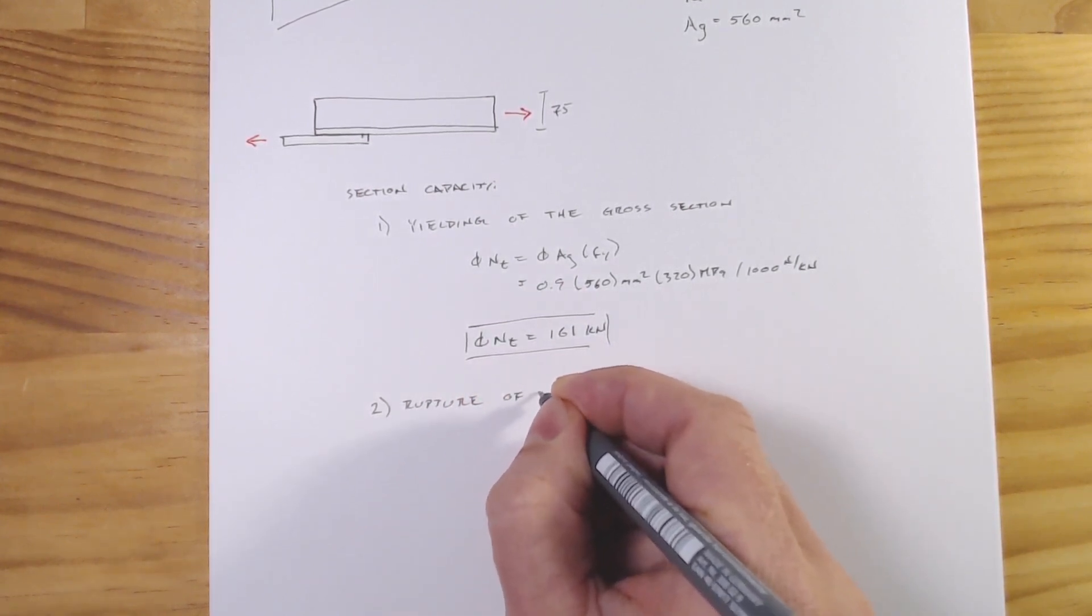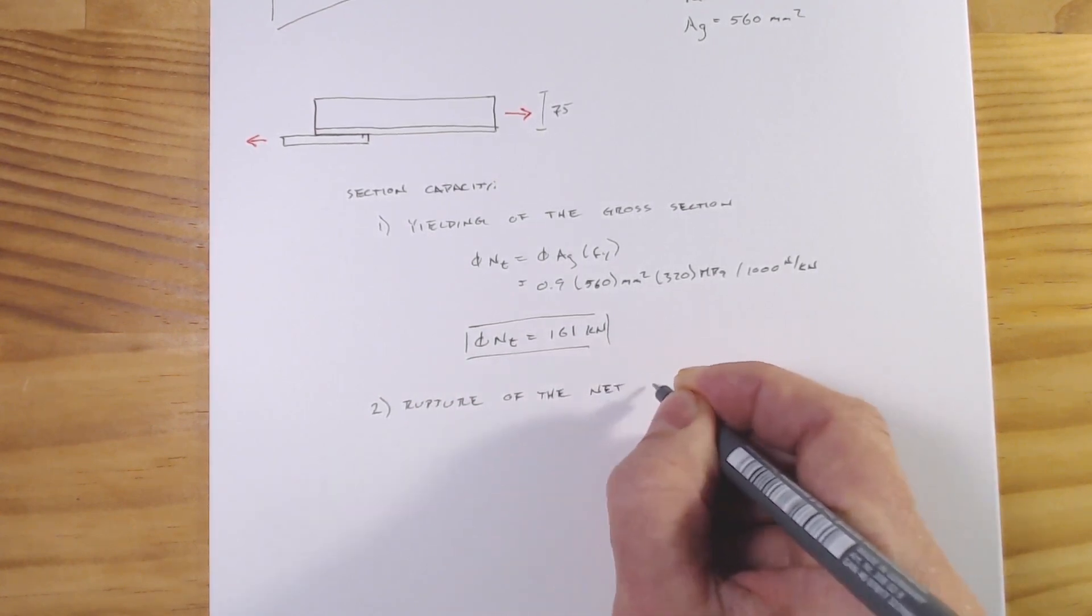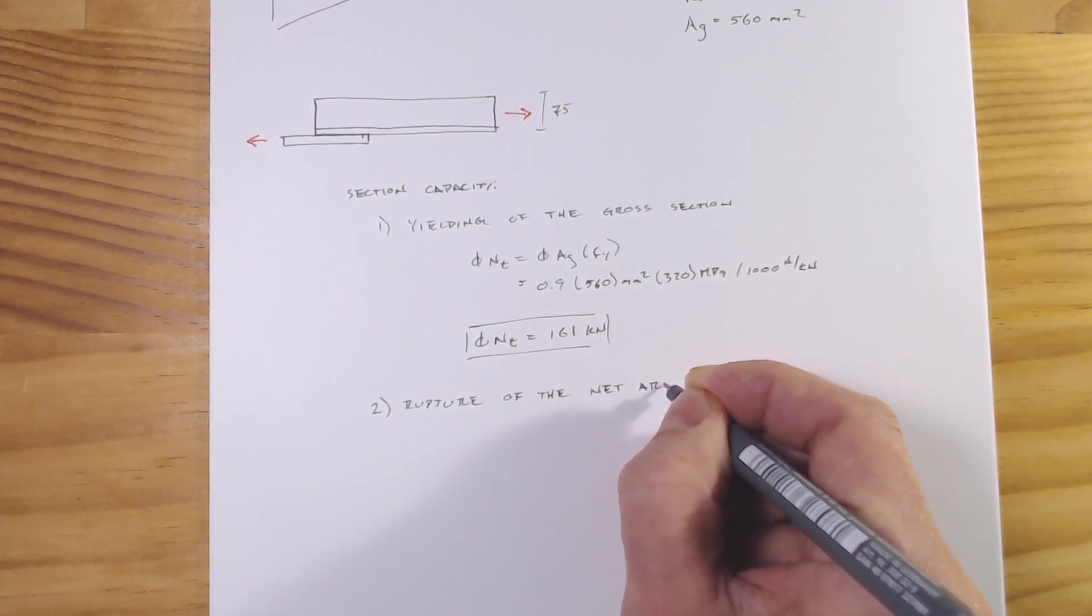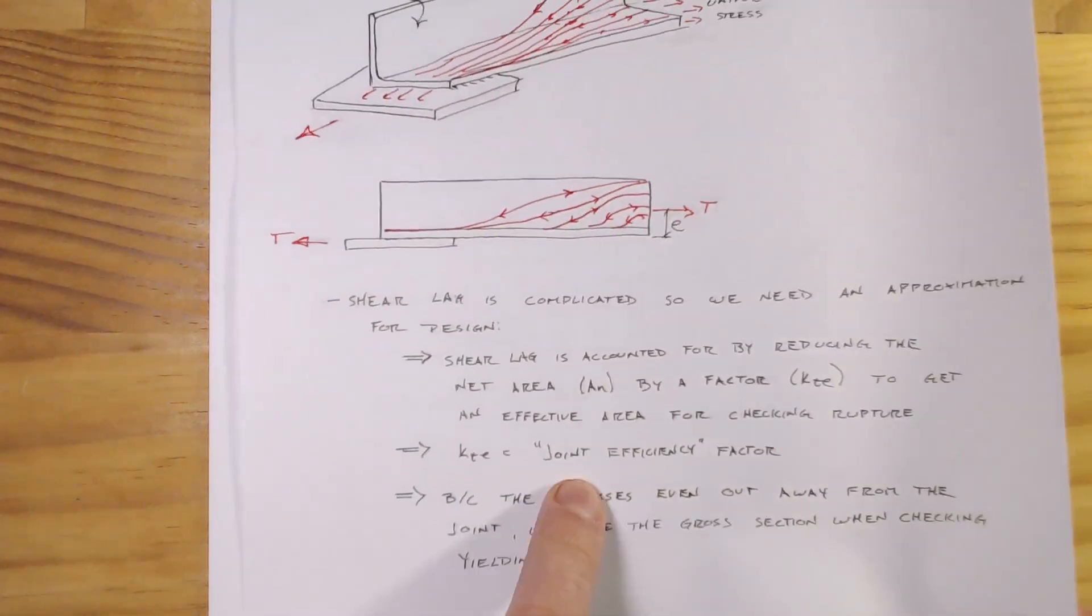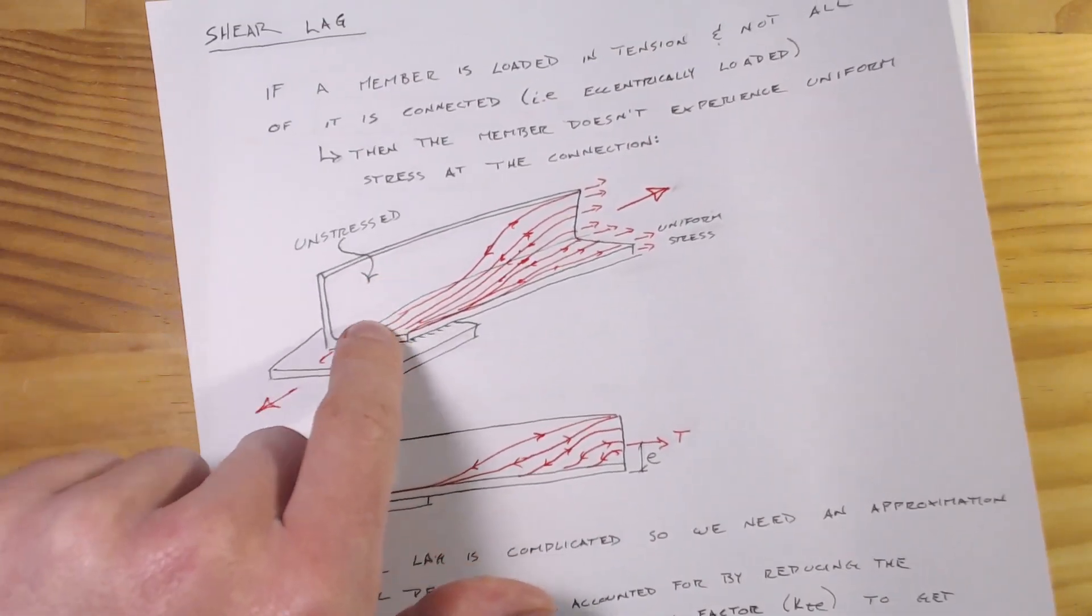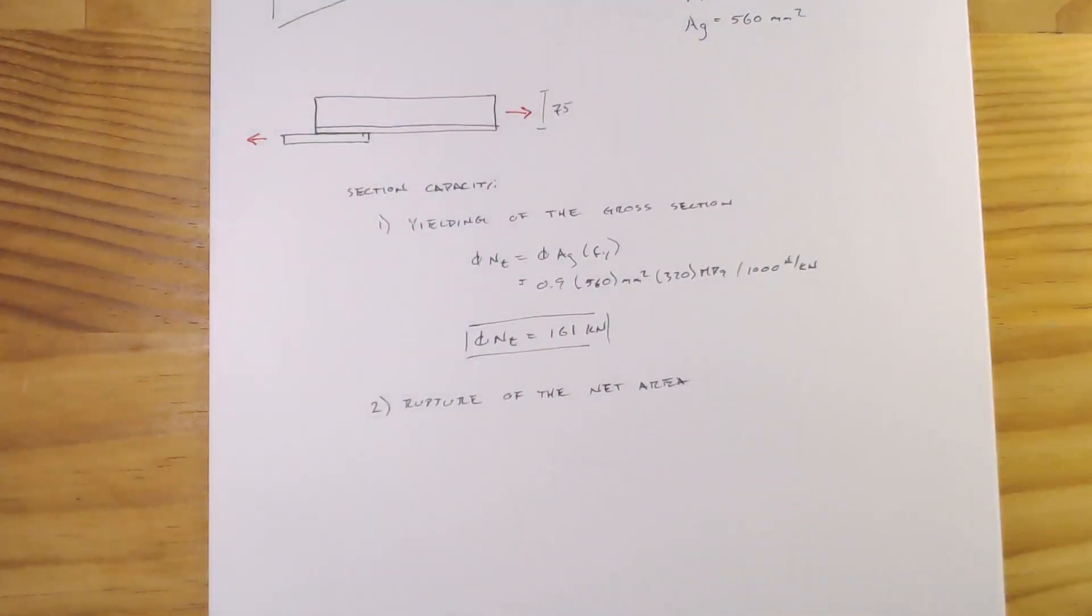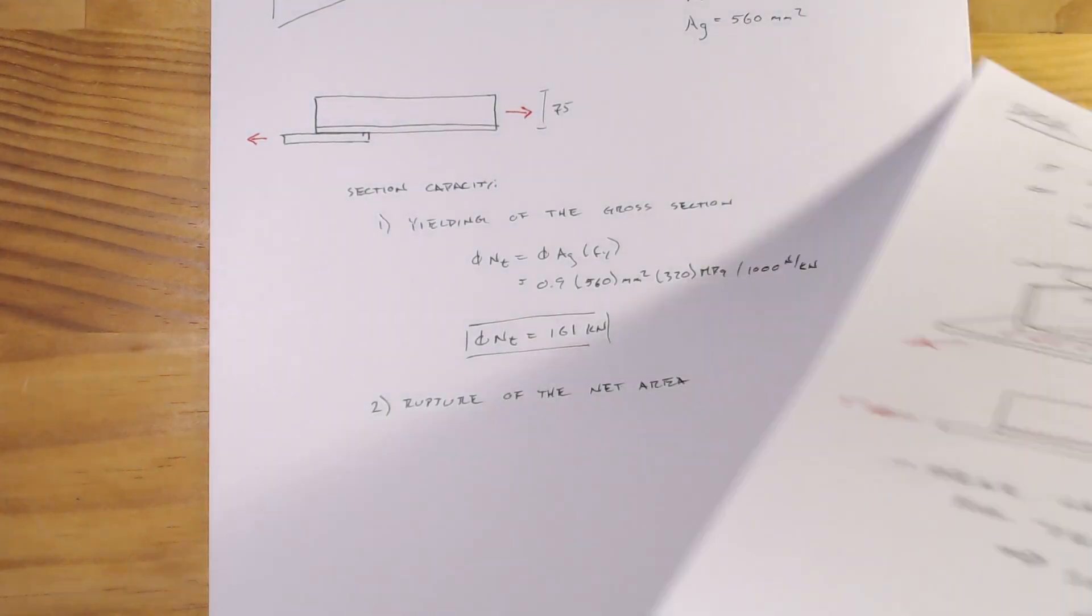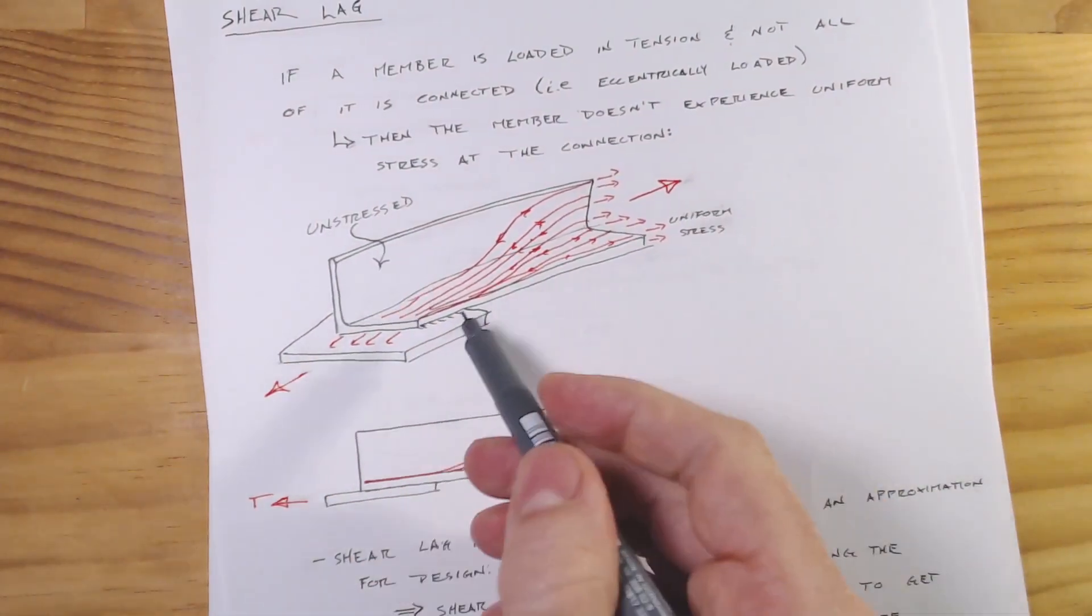Now looking at our second criteria which is going to be the rupture of the net area. This is where we're actually going to use this kte factor to account for the fact that not all of this section is actually being engaged, and so we're going to reduce down our net area.